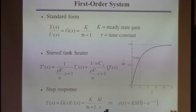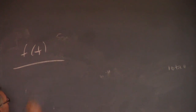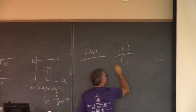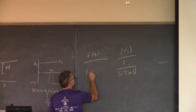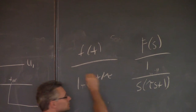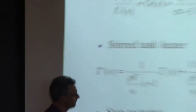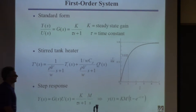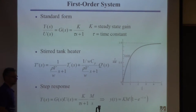Using that table result and multiplying by KM, the step response is y(t) = KM(1 - e^(-t/tau)). At t=0 the term e^(-t/tau) equals 1, so it starts at 0. Then it increases exponentially to the value KM. If you take the limit as t goes to infinity, the exponential term goes to 0 and you get KM.